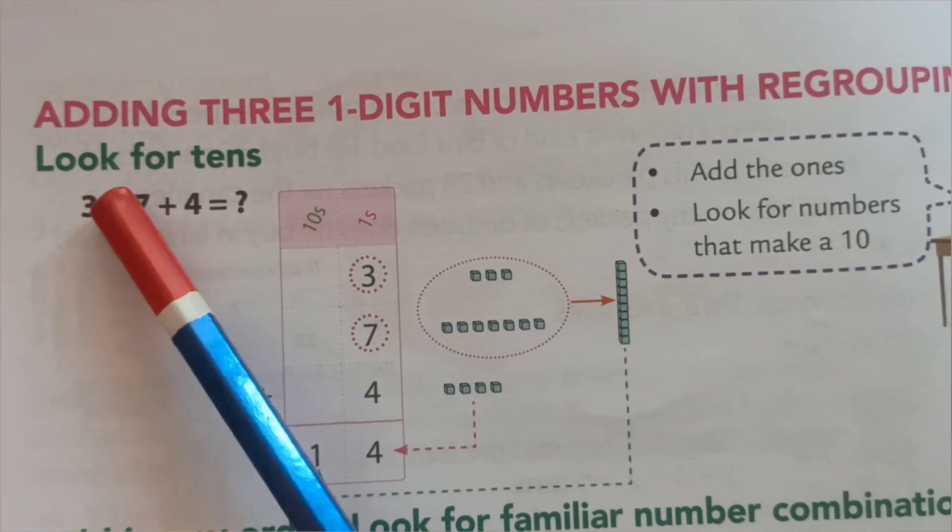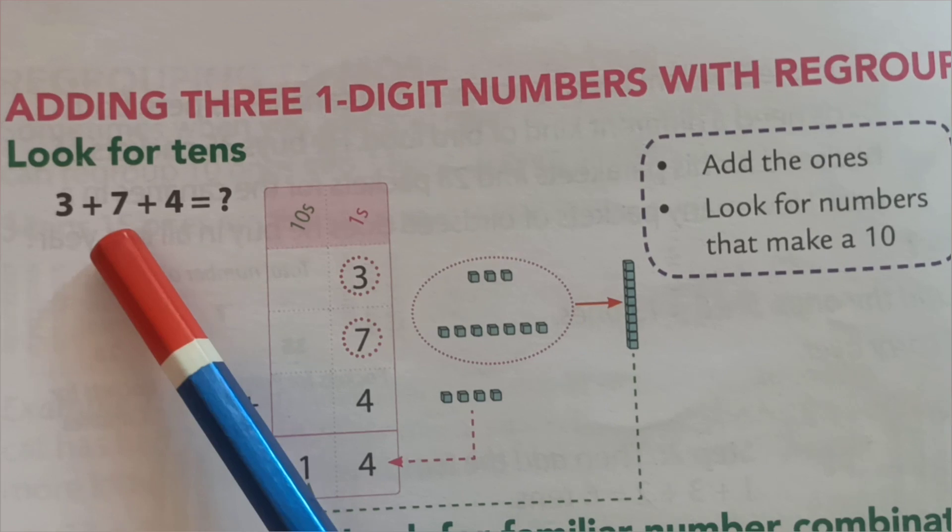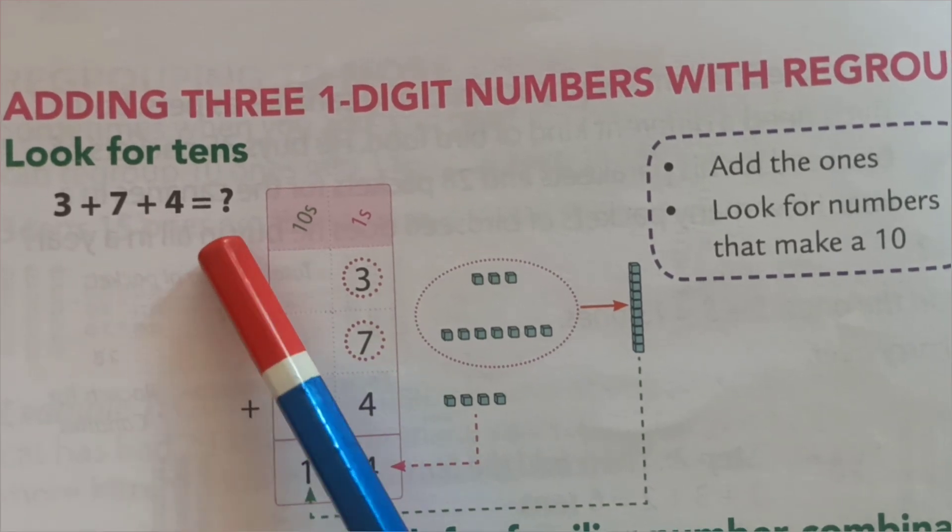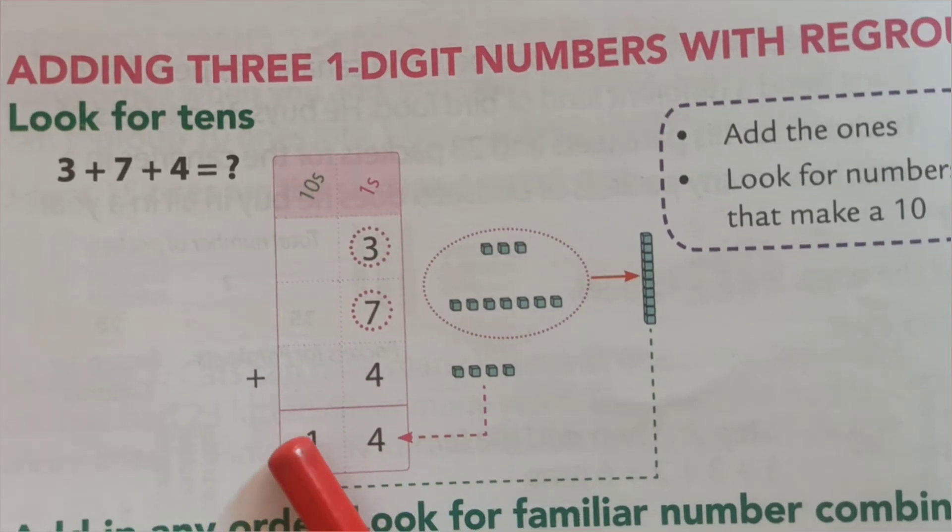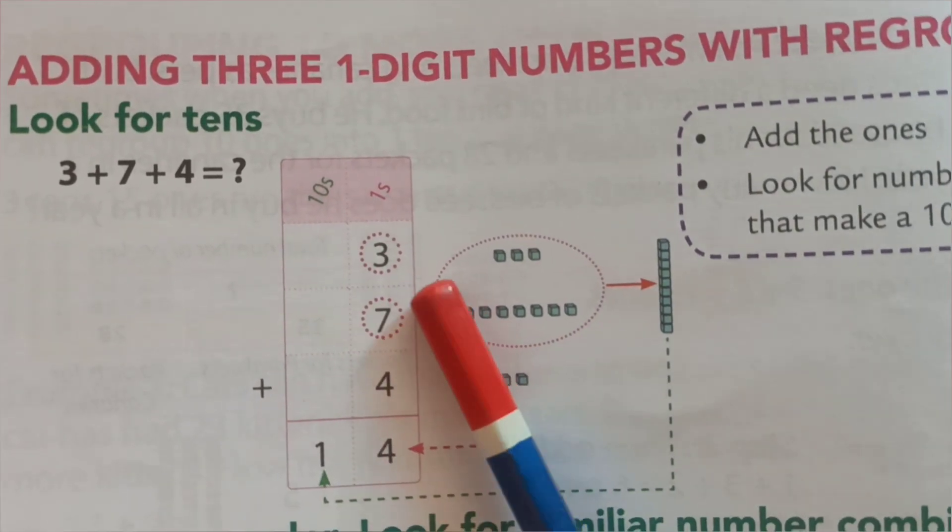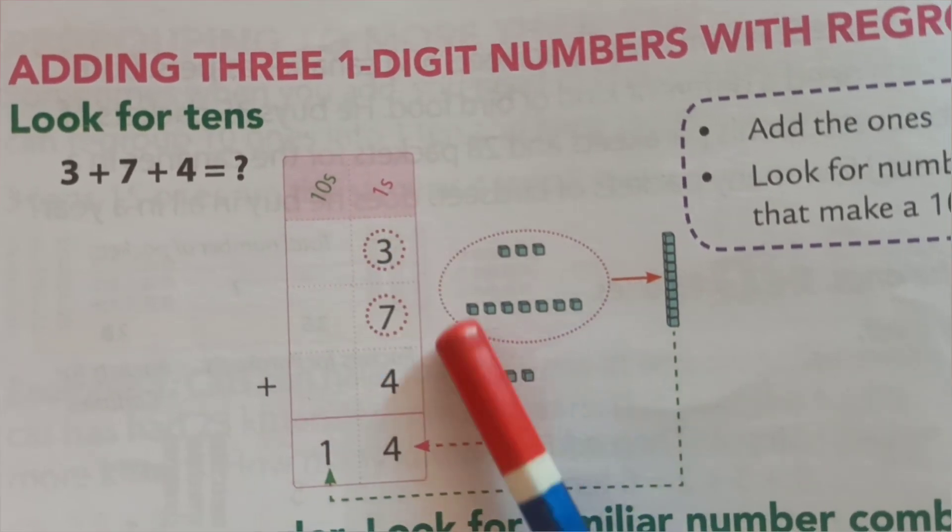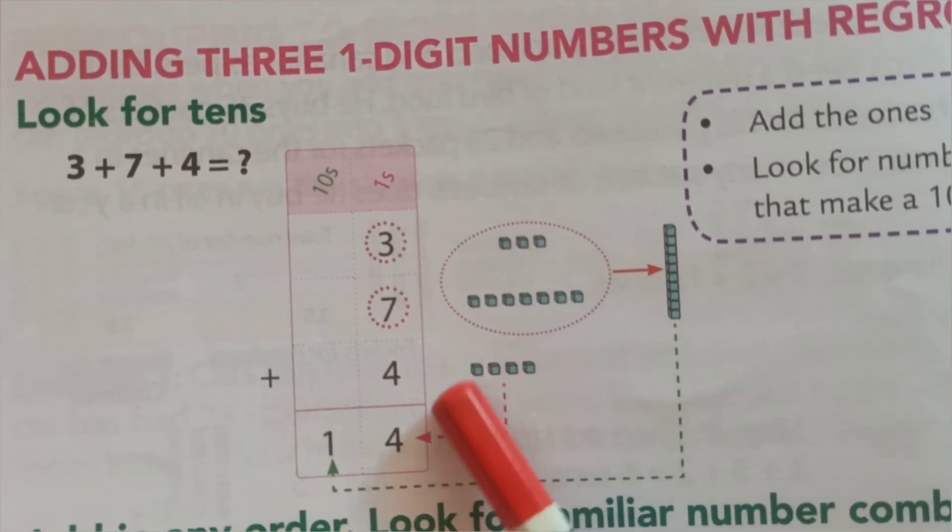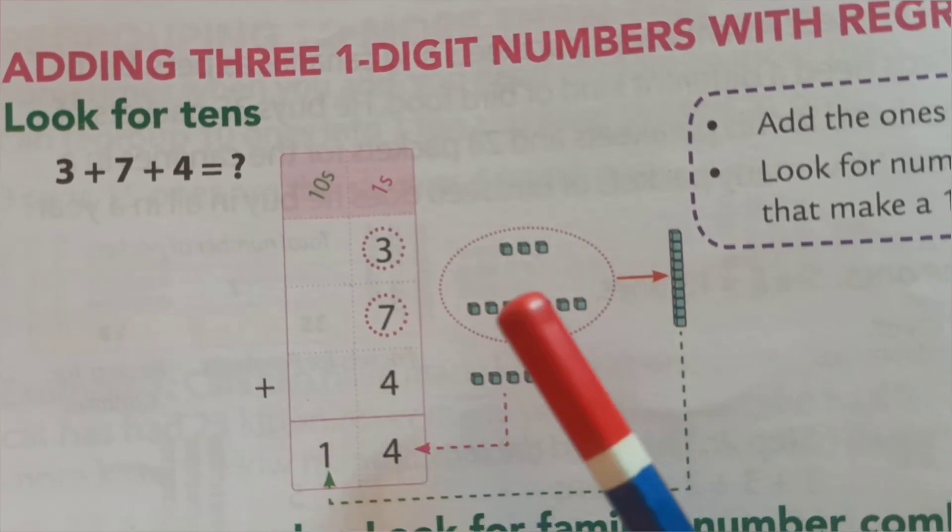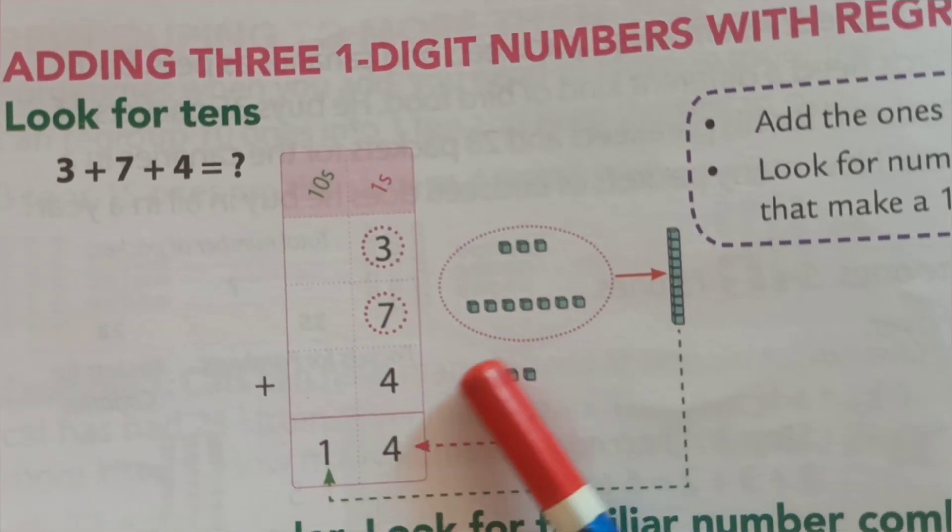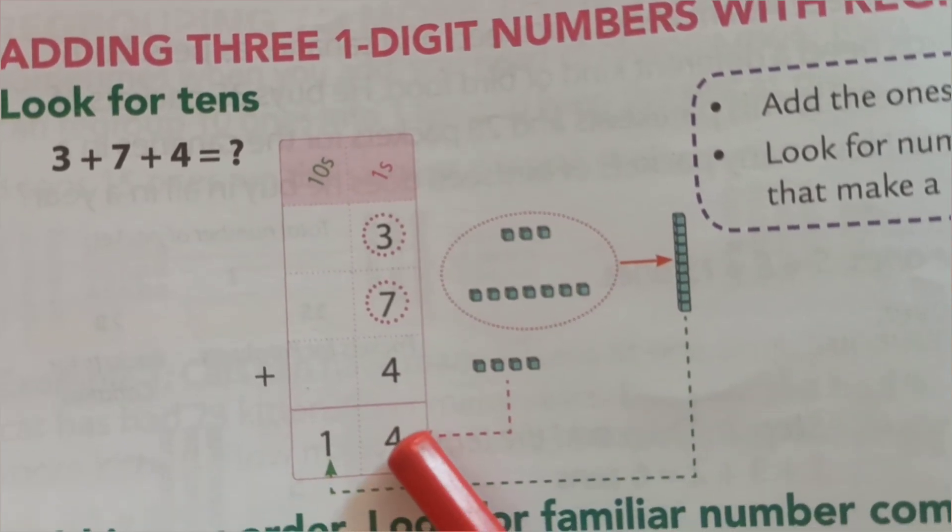See here, look for tens. 3 plus 7 plus 4 is equal to - first we form this type. 3, 7, 4, all are 1's. 3 ones, 7 ones, 4 ones. How many? 14.